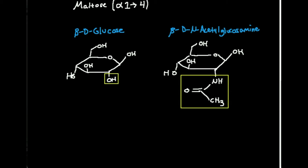In this video, we're going to talk about a polymer of carbohydrates called chitin. So maybe you've heard of cellulose — it's something that's talked about a lot in general biology — but one that's less talked about is chitin.